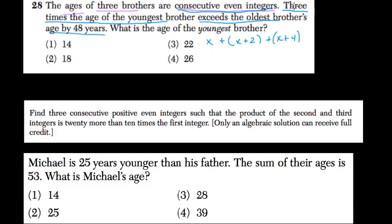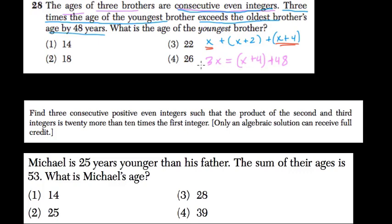We know three times the age of the youngest brother — the youngest brother's age is x — exceeds the oldest brother's age by 48 years. So 3x is equal to the oldest brother's age plus 48, because three times the youngest brother's age is 48 more than the oldest.